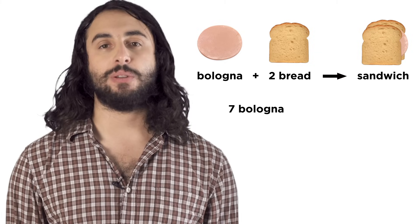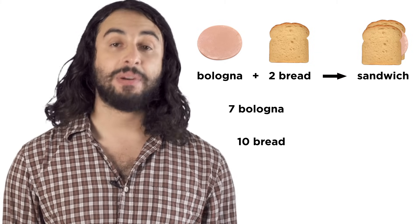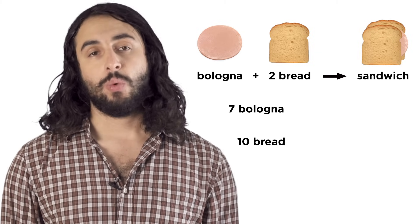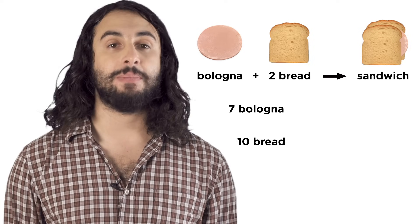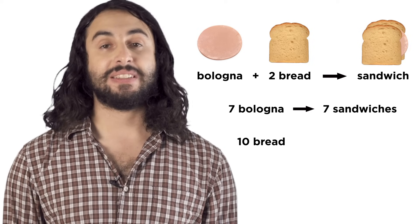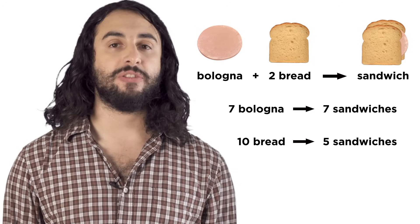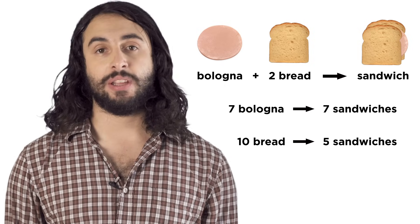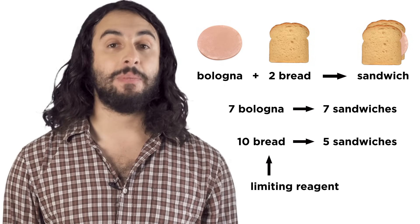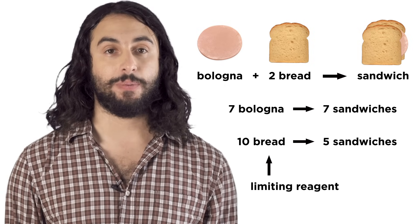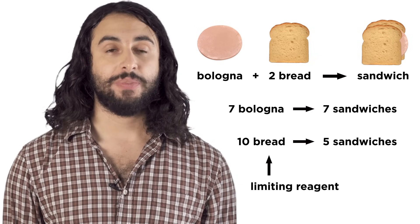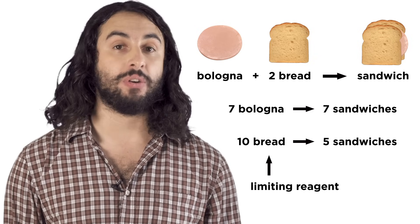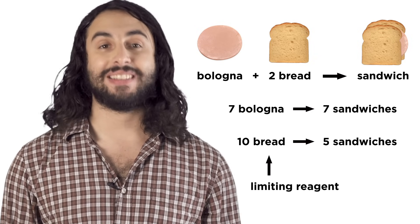Let's say we have seven bologna and ten bread—how many sandwiches can we make? Well, seven bologna could potentially make seven sandwiches, but ten bread can only make five because we need two per sandwich. So even though there's more bread than bologna, it is bread that is the limiting reagent in this example. The bread will react fully and leave an excess of two bologna, so bologna is in excess.